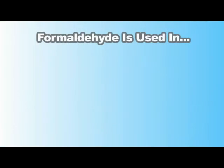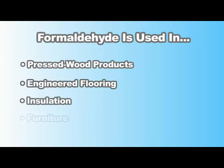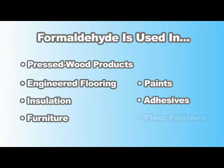One of the primary uses of formaldehyde is in building materials like pressed wood products such as particle board and plywood, engineered flooring, insulation, furniture, paints, adhesives, and floor finishes.